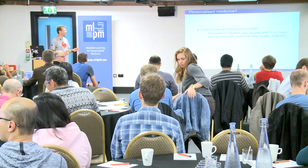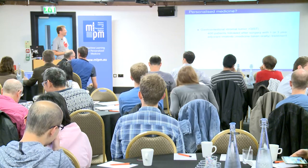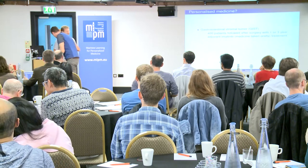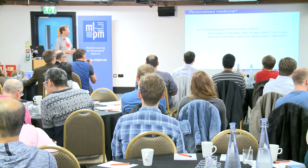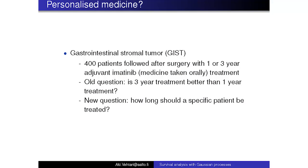So this is one of the examples I'll talk more about later. There were these 400 patients with this cancer, and then there was a surgery. The tumor was removed in the surgery, and then they were given one or three years of adjuvant imatinib, which is medicine taken orally to reduce the probability of reoccurrence.